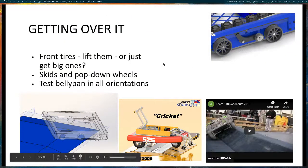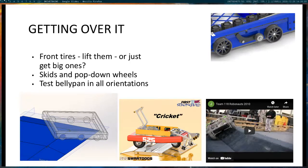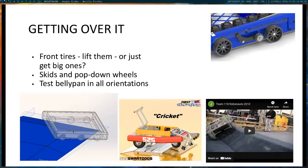You should test your drivetrain belly pan in all orientations. If you're going over a contoured ramp surface that has a corner, that corner can kill your drivetrain. You may be able to get over one side and the other side, but going over the corner your belly pan might catch and snag. Always test in all orientations, whether in CAD or with a quick physical prototype.